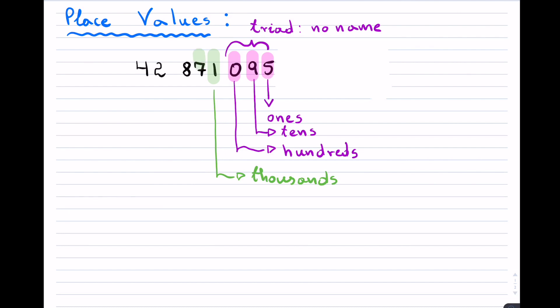The one that follows, which is the 7 in this case, is known as the ten-thousands. And finally, completing the triad, so the word tri meaning 3, this one is known as the hundred-thousands place value.